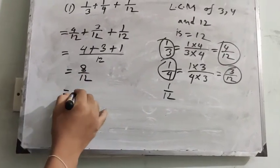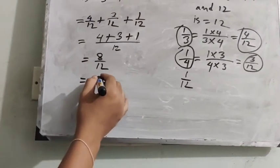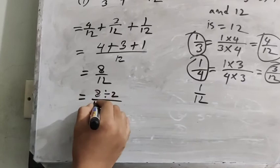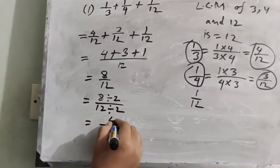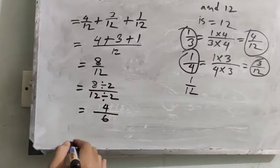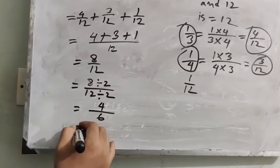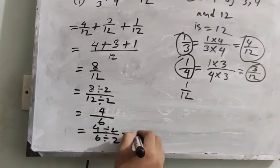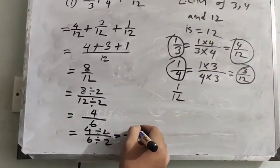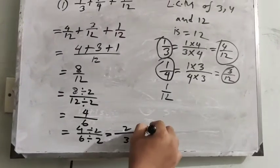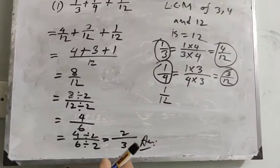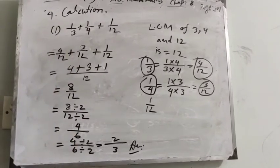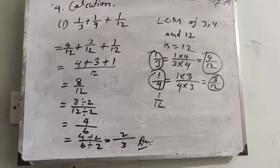Now we simplify 8/12. 8 is divided by 2 and 12 is divided by 2, giving us 4/6. Again, 4 is divided by 2 and 6 is also divided by 2, giving us 2/3. So this is the answer — the result of the addition of 3 fractions: 1/3 plus 1/4 plus 1/12. The answer is 2/3.